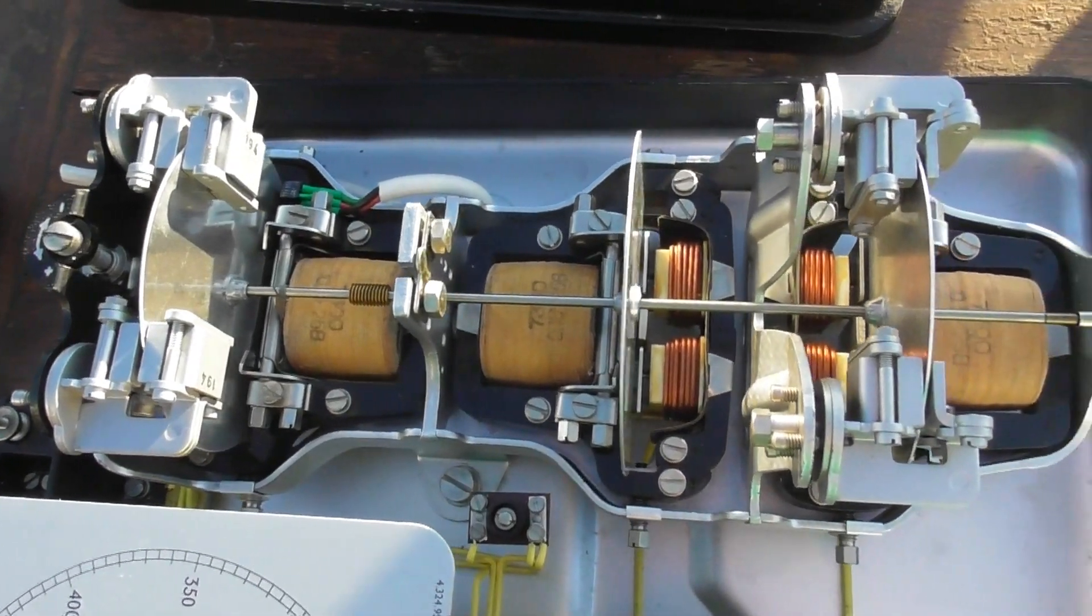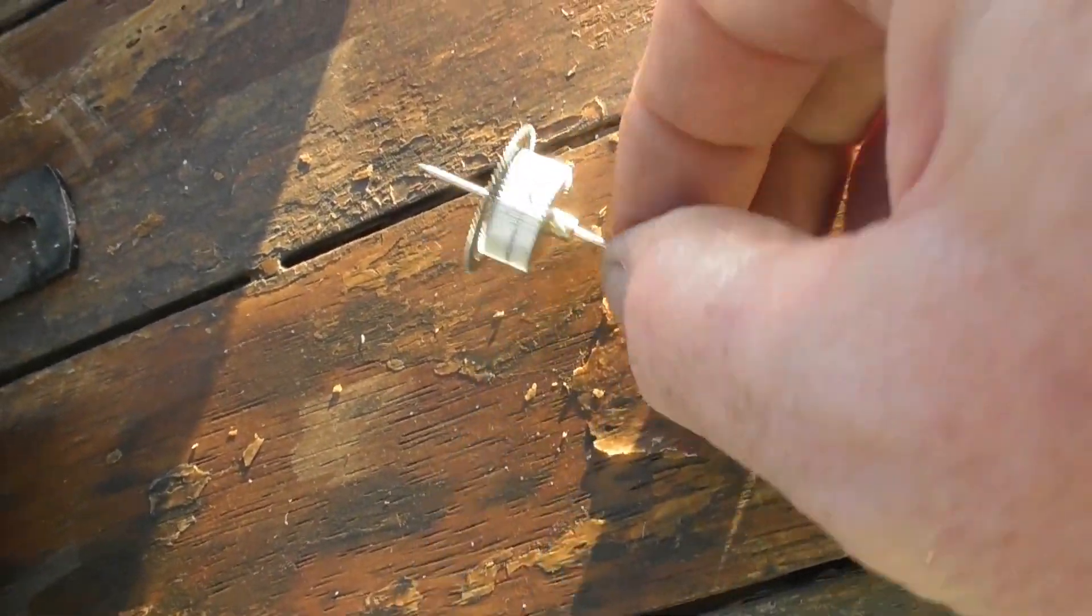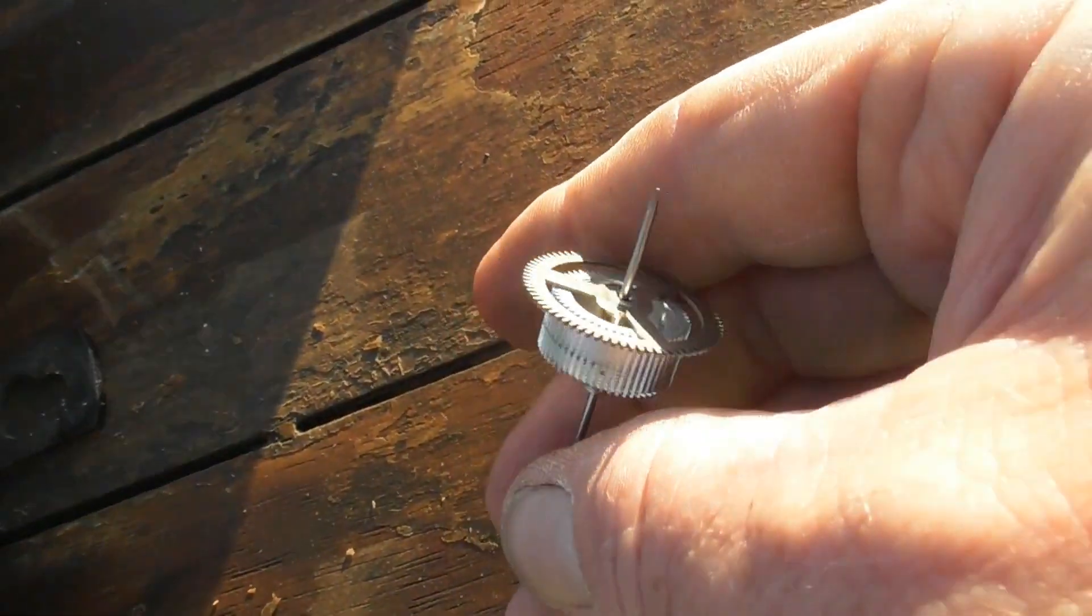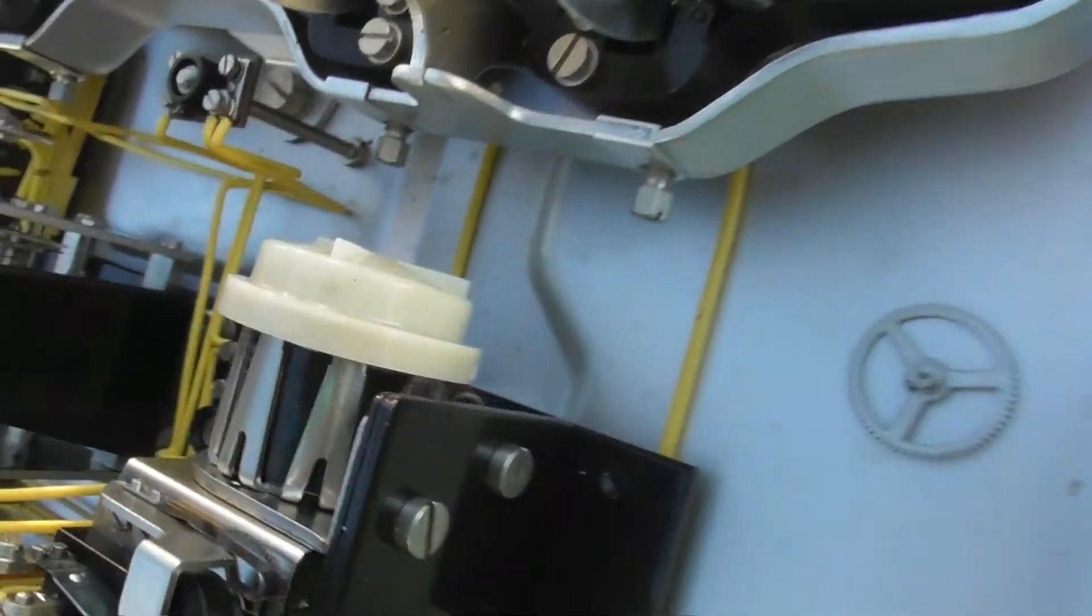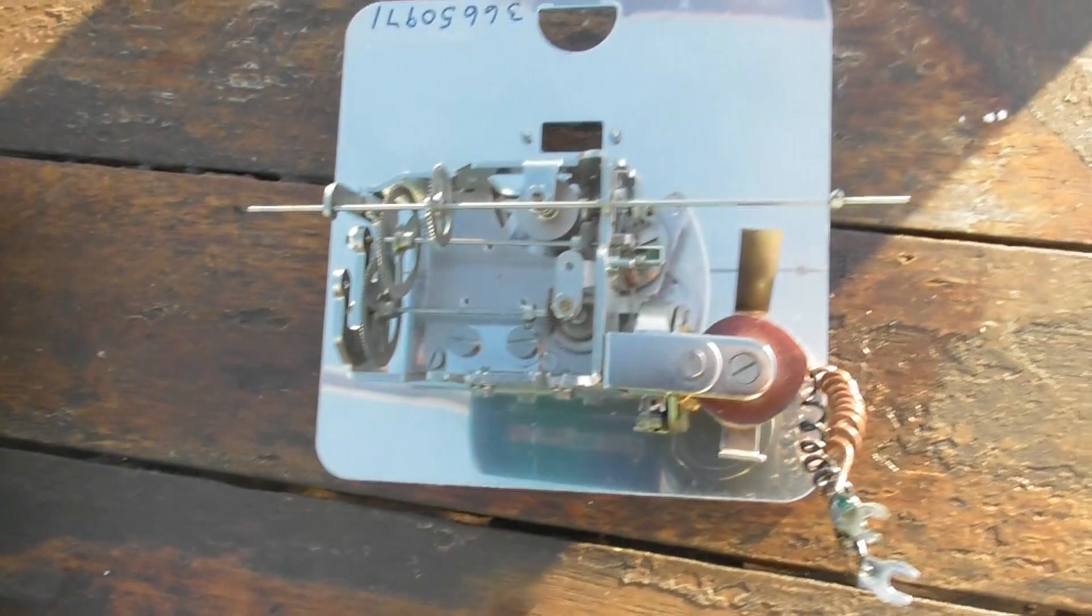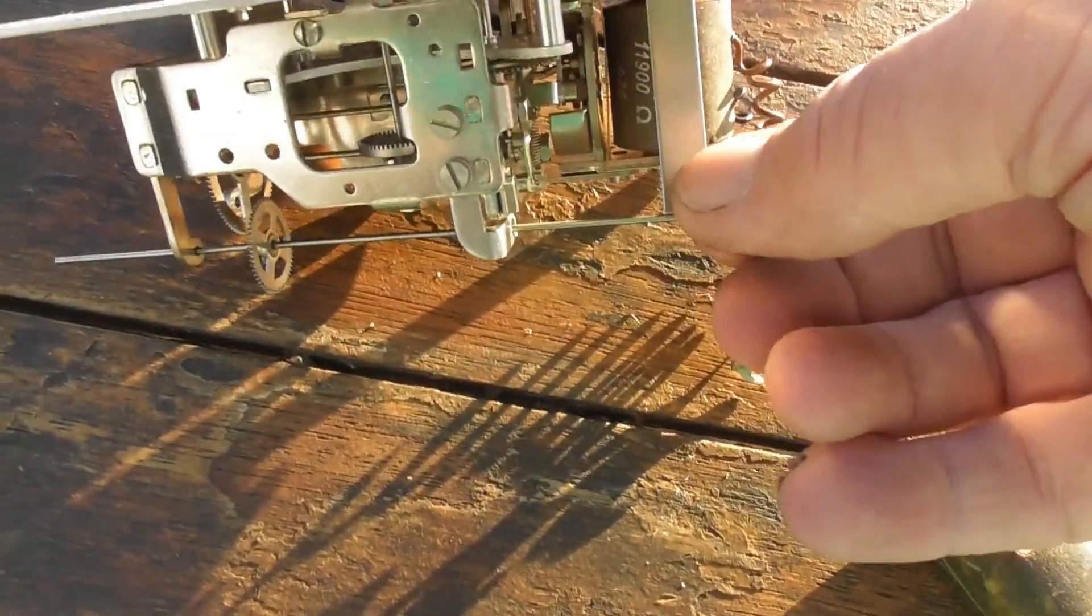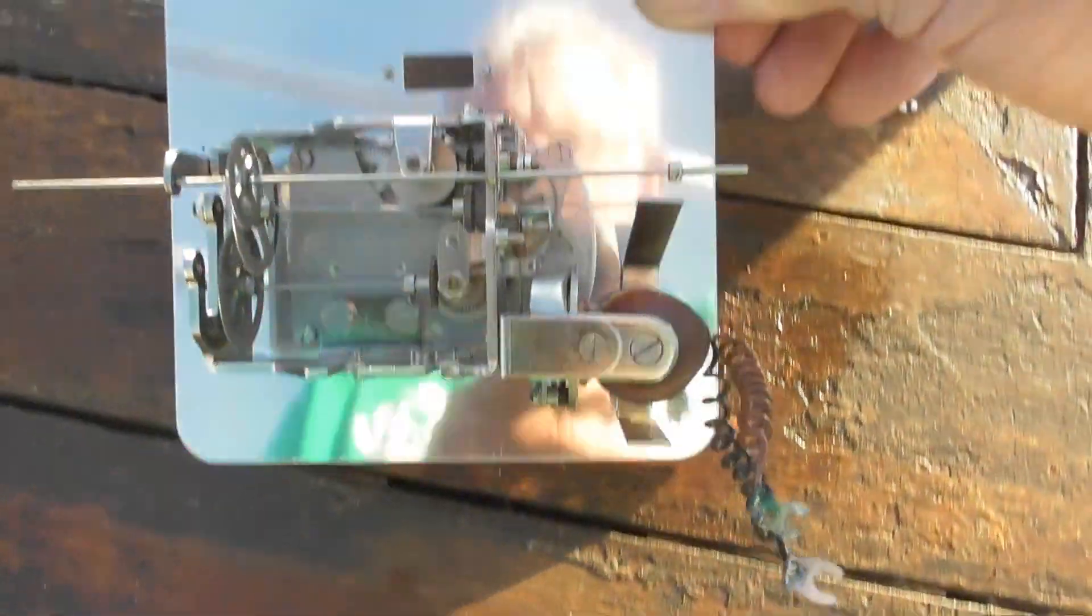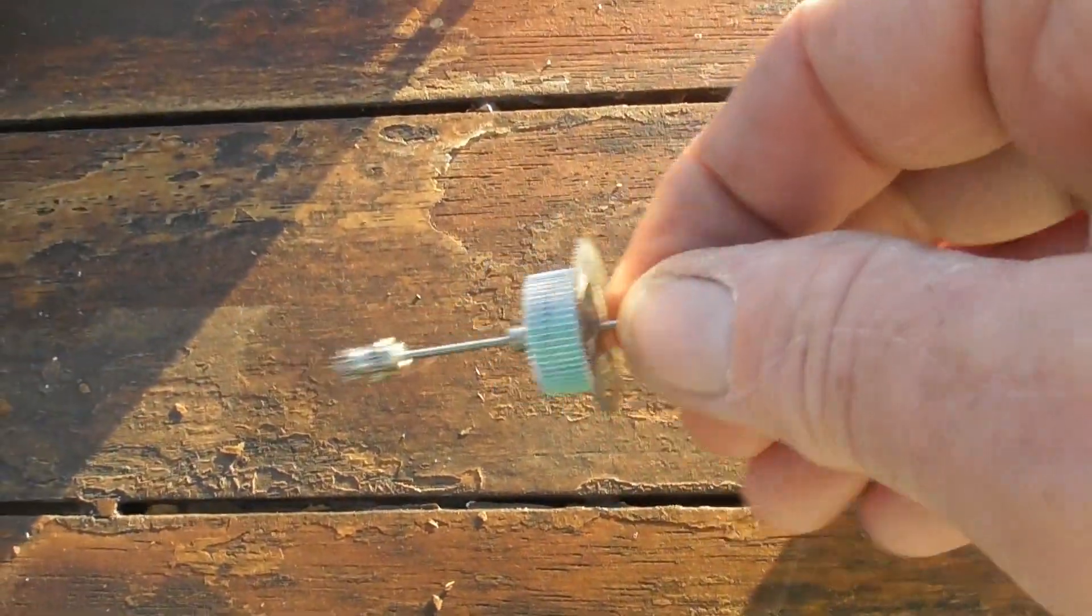I had to go a bit more in depth in this meter because it wasn't driving the kilowatt-hour register. I found this particular shaft has been bent - this is a drive shaft which drives the register here. Somebody must have had a play with this at one stage, but luckily I've got spare parts for these meters so I can fix this.